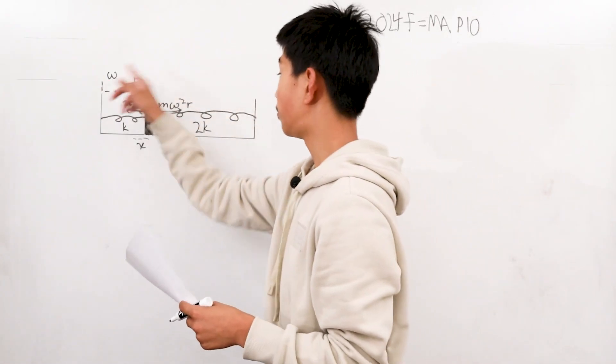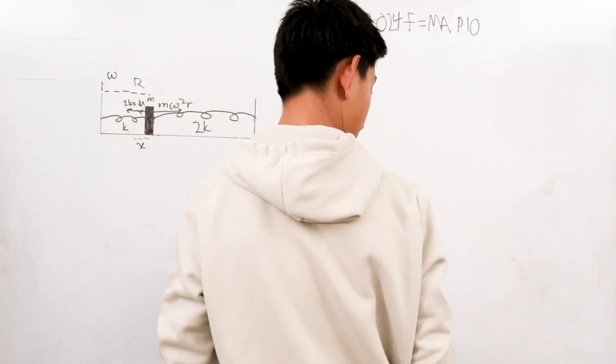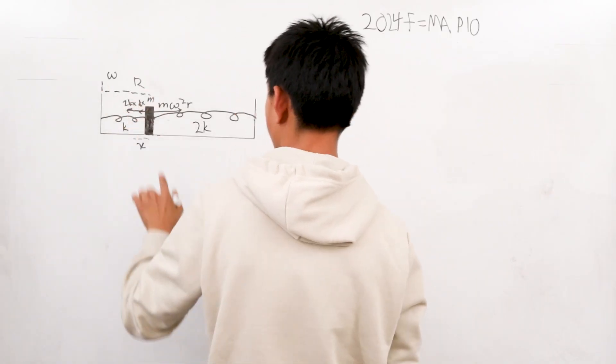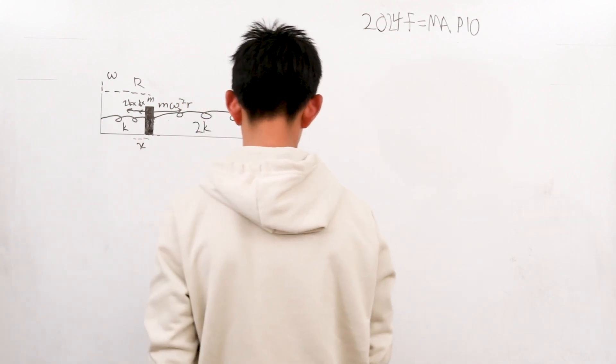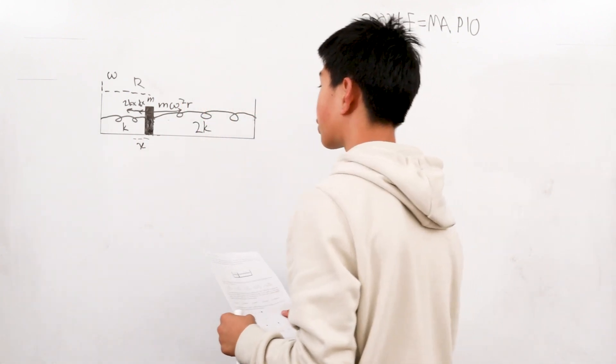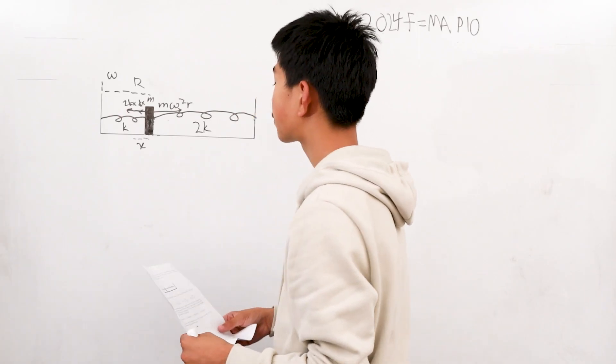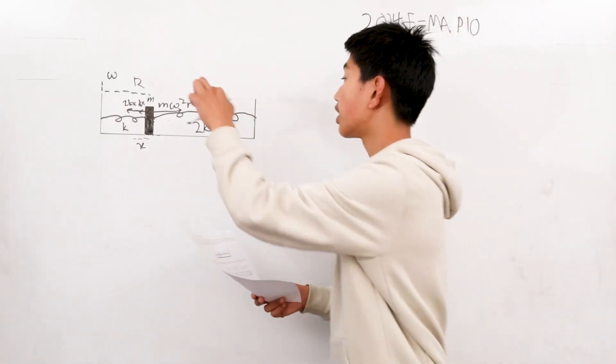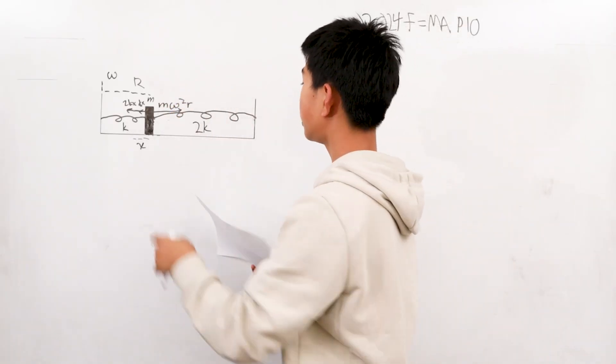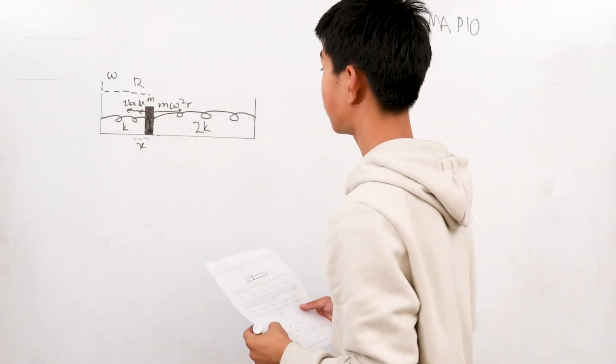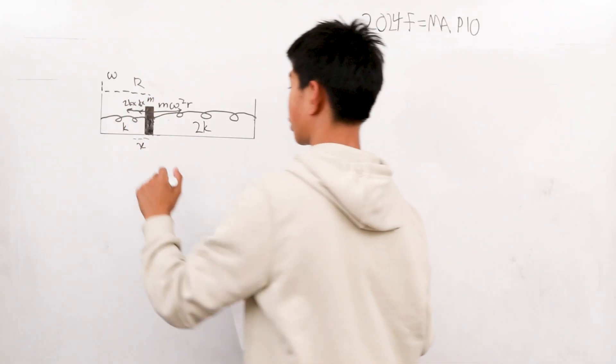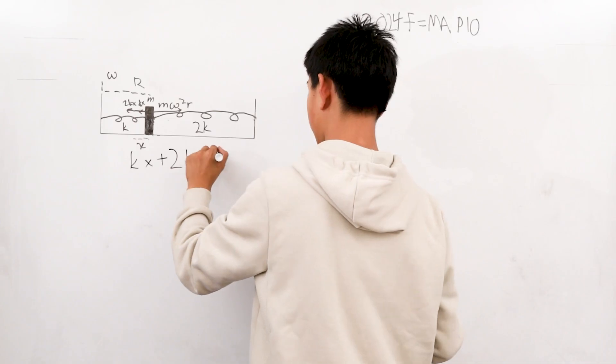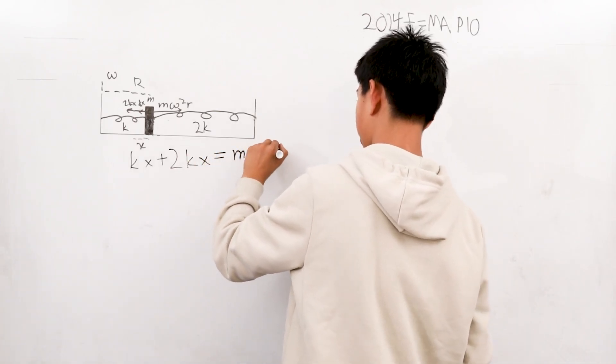So we have this big distance R from the edge to the middle of the box near the length of the spring and we have the small x here. First things first, we can balance forces on each other and the force on this side would be the formula for the angular velocity M omega squared times R and these are all just the spring constants times our small distance x. So we say that K times x plus 2Kx equals M omega squared times R.